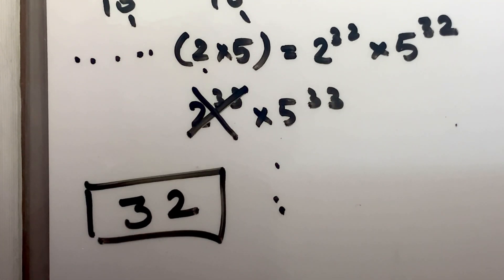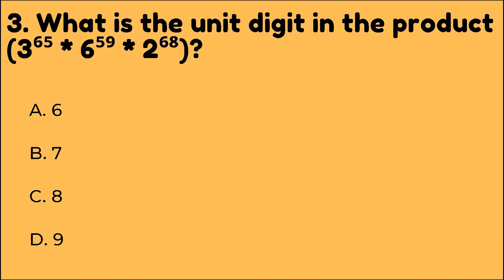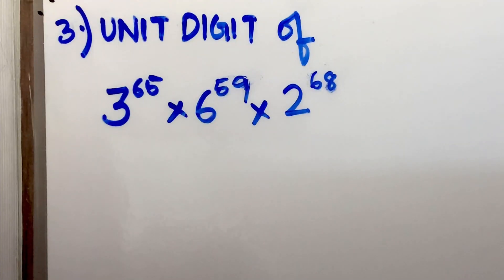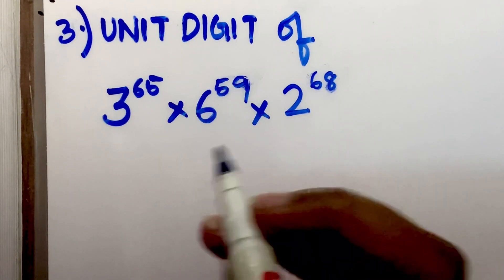Now let's look at the options. Option B, 32, is the correct answer. Next question. What is the unit digit in the product 3 raised to 65 multiplied by 6 raised to 59 multiplied by 2 raised to 68? To solve this question, you need two concepts.